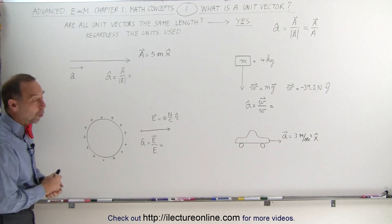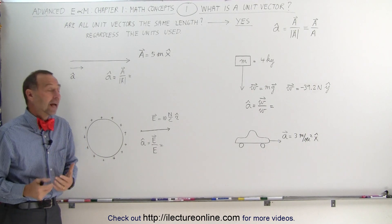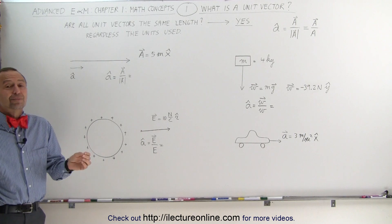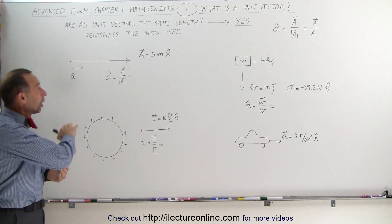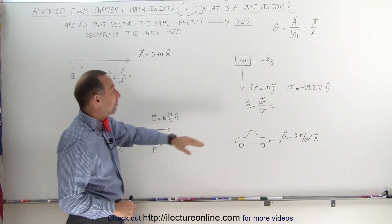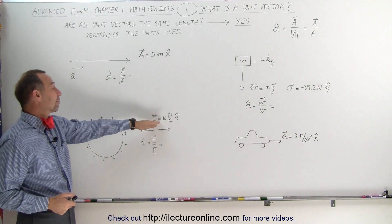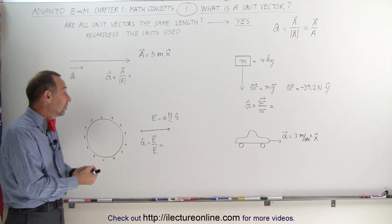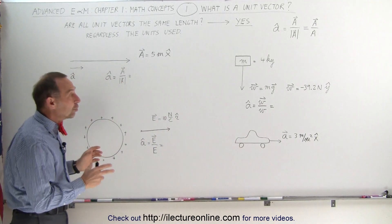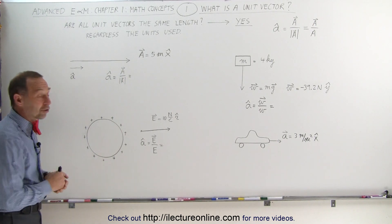We're starting with what is a unit vector. This is not exactly advanced mathematics, but we use it a lot in electricity and magnetism. The question may be: are all unit vectors the same length? The answer is, surprisingly, yes — regardless of the units we use. We can have vectors in meters for displacement, newtons for force or weight, electric fields, or acceleration in meters per second squared. Regardless of units, the unit vector is always the same length.